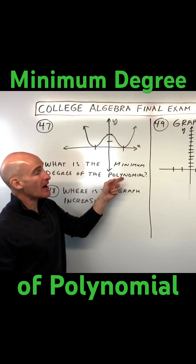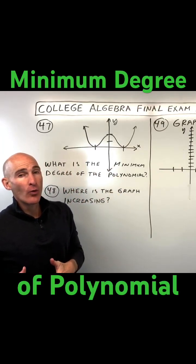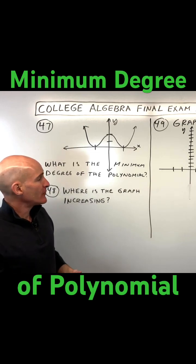What is the minimum degree of the polynomial? Now, when you're given a polynomial, like say if you had something like